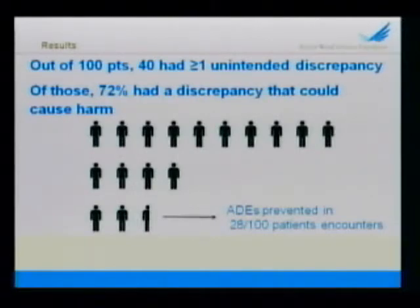How was harm evaluated? We had two physicians and two pharmacists — Bob was one of them — who were not part of the intervention team, who, with Excel spreadsheets, rated hundreds of discrepancies. We rated them on a level of one to three: one being probably no harm would have occurred, two meaning moderate harm could have occurred had we not detected it, and three meaning serious harm could have occurred.